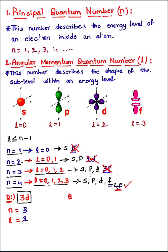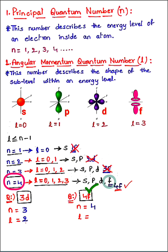Another example: for an electron in the 4f sub-level, n is the number in front of f, so n=4. The f sub-level always corresponds to an l value of 3.